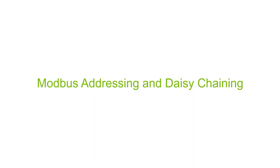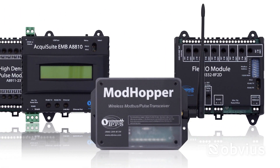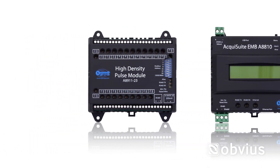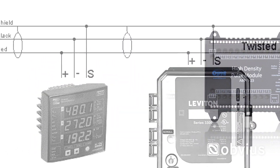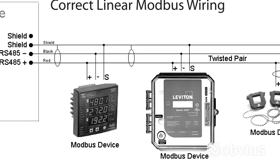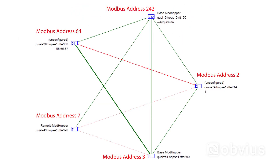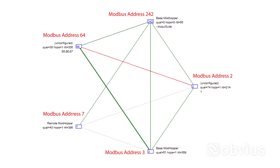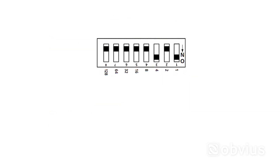This video will cover how to set Modbus Addressing and Daisy Chaining of Modbus RTU devices. Modbus Addressing is used to identify different Modbus RTU devices on a particular network. It is important that all Modbus devices on the same network have a unique Modbus Address.